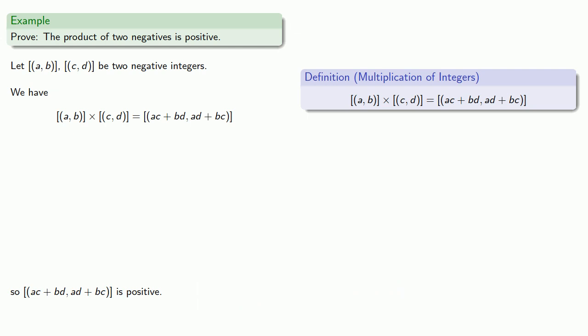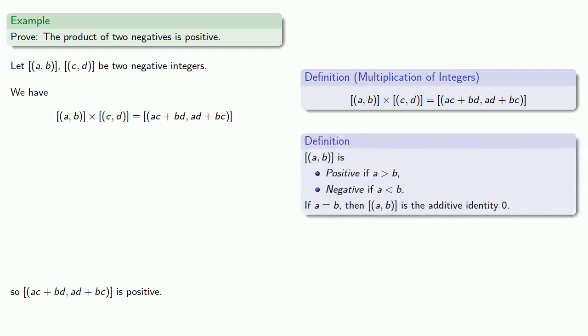Definitions are the whole of mathematics. All else is commentary. We have a definition for positive and negative. Since we want our product to be positive, that means our first term has to be greater than the second term, which allows us to construct one step back on our bridge.